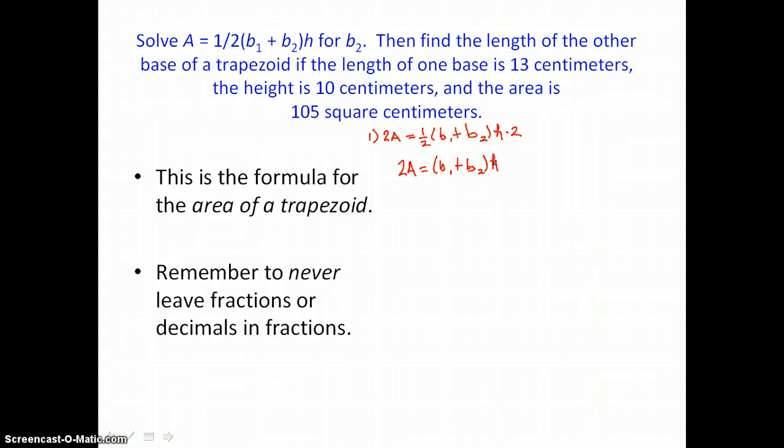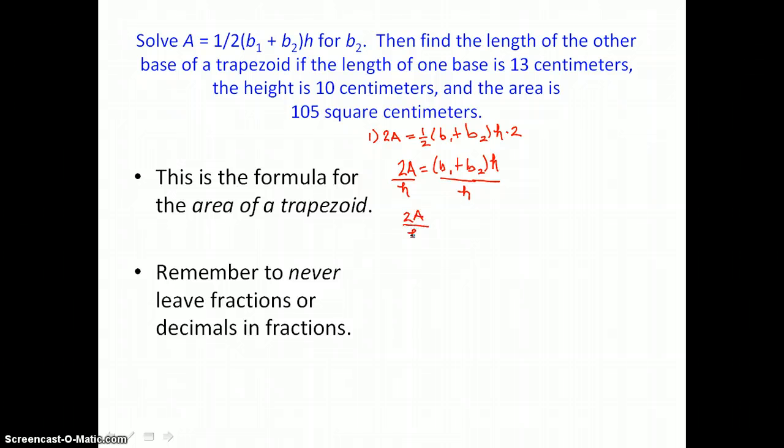Now if we're solving for b₂, we want to undo this multiplication. So now we'll divide both sides of this equation by h to get our sum alone on the right-hand side. So we have 2A over h equals, h cancels on this side, so we're left with b₁ plus b₂.